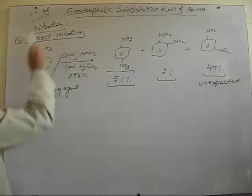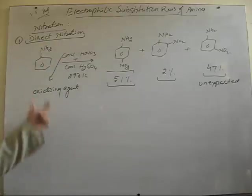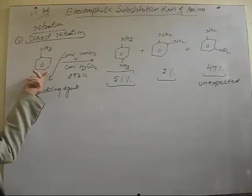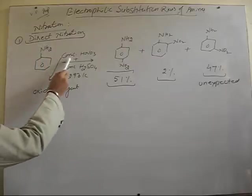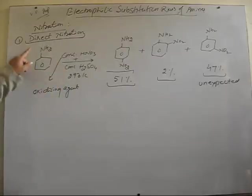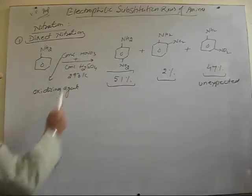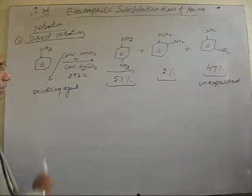Let's discuss nitration of aromatic amines like aniline. Nitration takes place. I discussed the first example, that is direct nitration - directly heating aniline with a nitrating mixture of concentrated nitric acid, sulfuric acid, at 298 Kelvin.